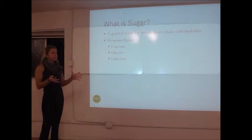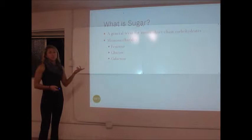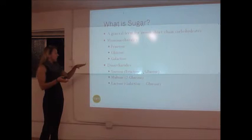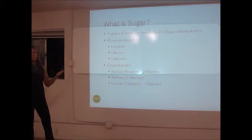Fructose we find in fruit. Glucose is what everything breaks down to — no matter what kind of carbohydrate you eat, it'll eventually end up as glucose in your blood. Galactose is the sugar found in milk. Disaccharides means two sugars together: sucrose is fructose and glucose, maltose is two glucoses, and lactose — the sugar in milk — is galactose and glucose together.